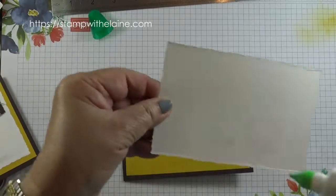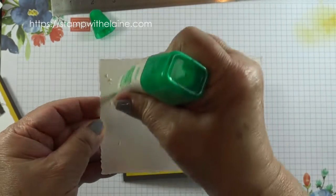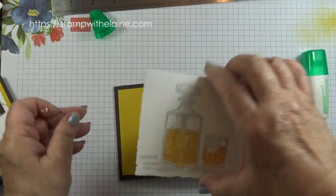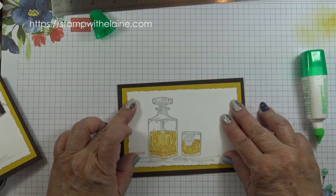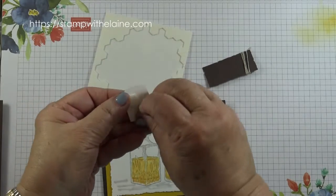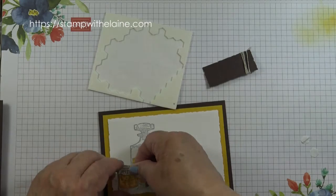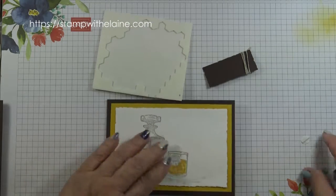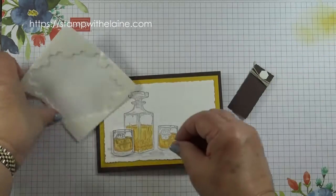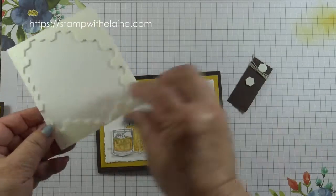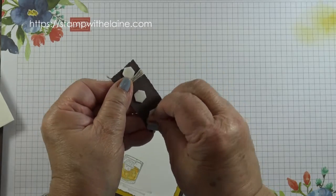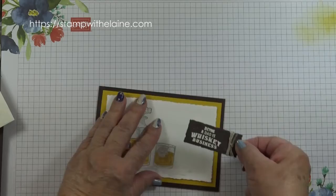Bring back my card base and apply adhesive to this. Pop dimensionals on the whisky glass. Put it in front of the decanter. Do the same with this piece here for the sentiment. And glue that on top here.